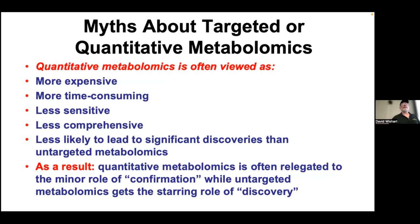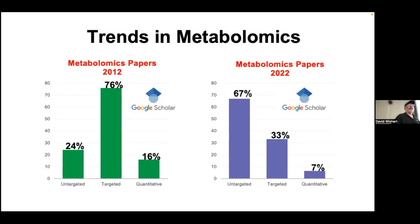The myths about untargeted metabolomics are many and widespread. In terms of targeted metabolomics, most people think it's too expensive, too time-consuming, and lacks comprehensiveness. Many think it's less likely to lead to significant discoveries because you can't do hypothesis generation. So targeted quantitative metabolomics is typically relegated to a minor role of confirmation, while untargeted metabolomics has been getting the starring role of discovery—and that's reflected in the number of papers published.